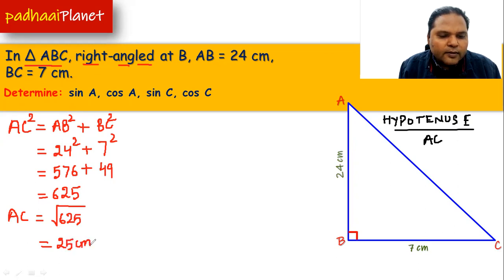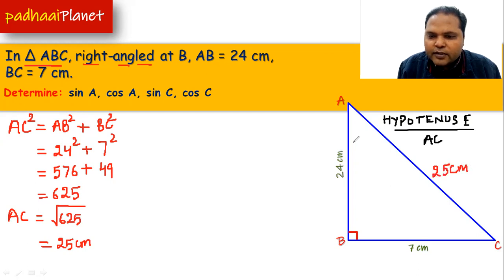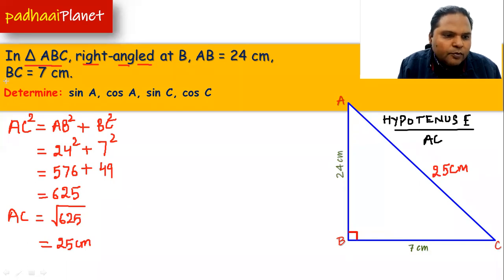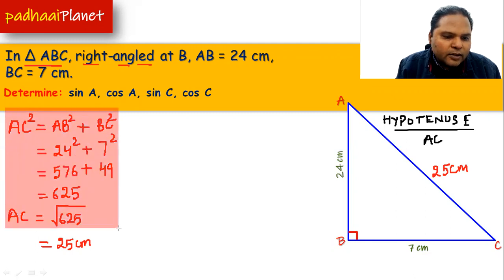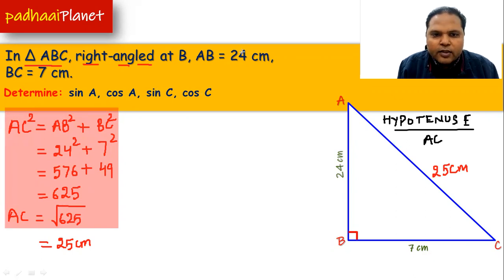Then we have AC equal to the square root of 625, and finally we have it as 25 centimeters. That's how we have got the value of AC, which is 25 centimeters. Now we will be calculating the other values, which are sin A, cos A, sin C and cos C.